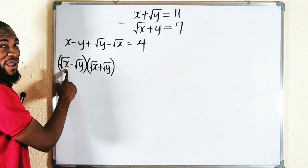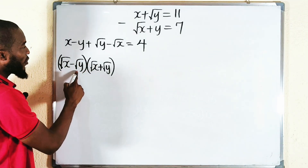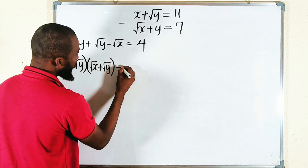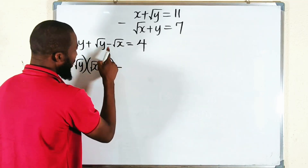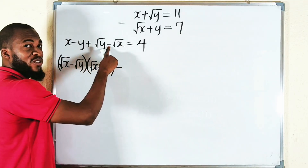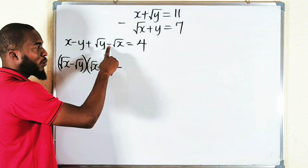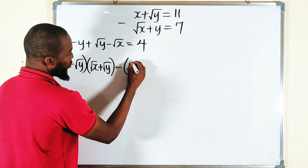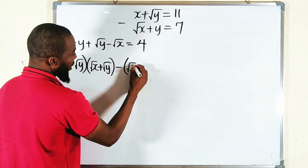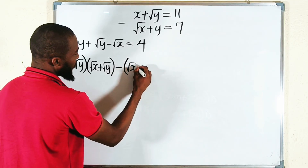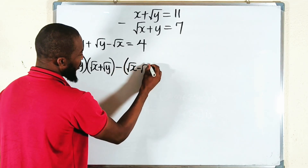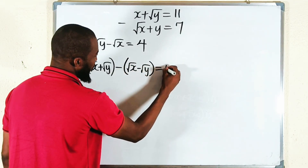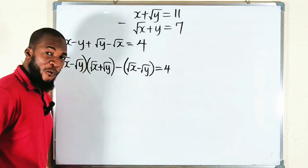Because we have square root of x before square root of y, I can rearrange this — you change the minus to plus and switch the terms. So this becomes square root of x minus square root of y, multiplied by square root of x plus square root of y, and this is still equal to 4.